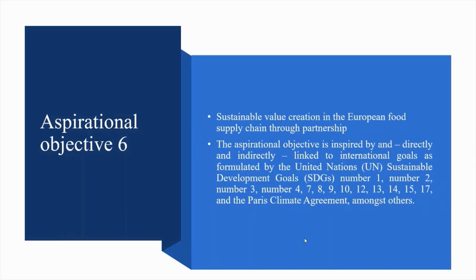Aspirational Objective 6: sustainable value creation in the European food supply chain through partnership. This is linked to SDG 1 No Poverty, SDG 2 Ending Hunger, SDG 3 Health and Well-Being, SDG 4 Quality Education, SDG 7 Affordable and Clean Energy, SDG 8 Decent Work and Economic Growth, SDG 9 Industry Innovation and Infrastructure, SDG 10 Reduced Inequalities, SDG 12 Sustainable Production and Consumption, SDG 13 Climate Action, SDG 14 Marine Protection, SDG 15 Biodiversity, SDG 17 Partnerships, and the Paris Climate Agreement, among others.